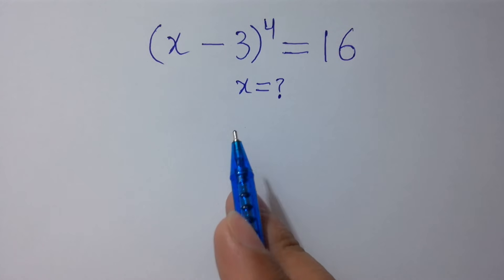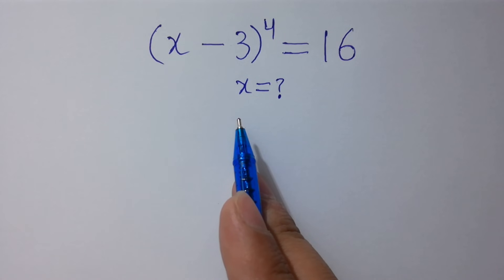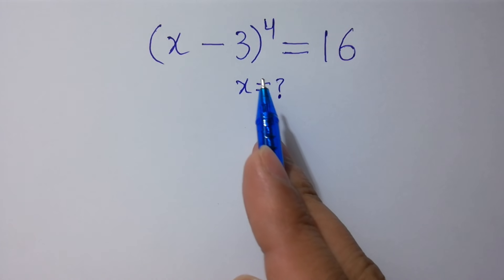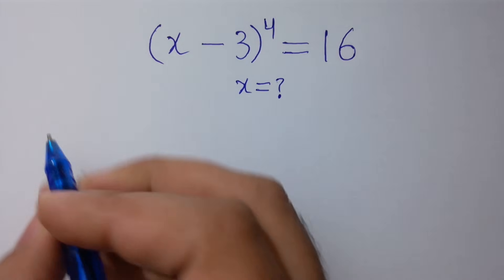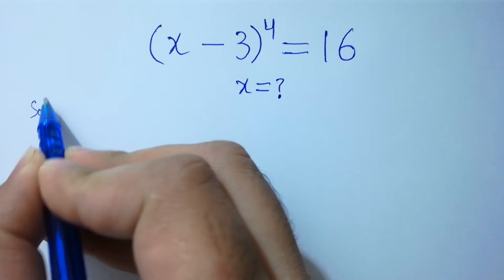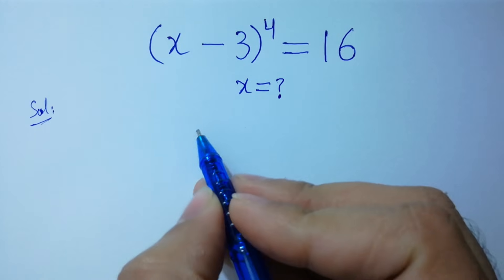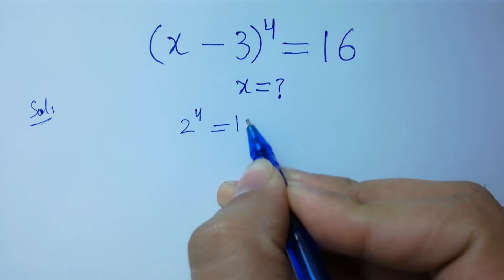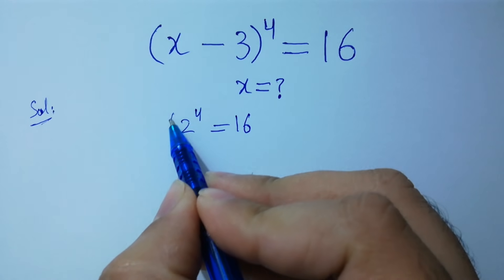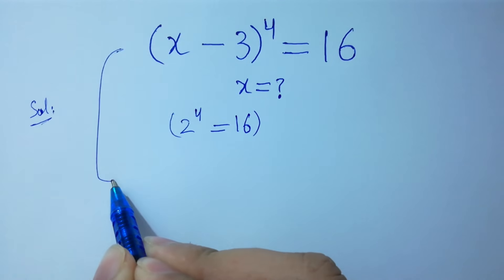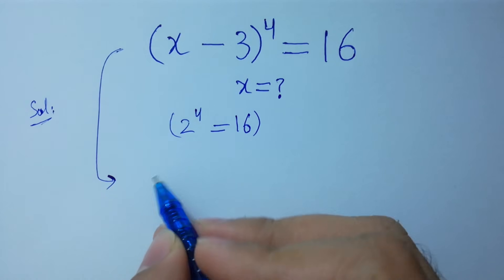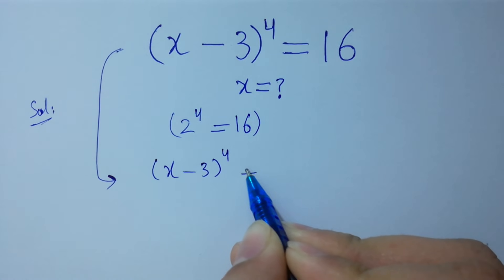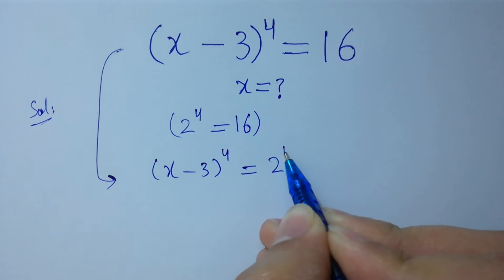Hello friends, find the value of x if (x minus 3) to the whole power 4 equals 16. Let's find the solution. Since 2 to the power 4 equals 16, we can write (x minus 3) to the whole power 4 equal to 2 to the power 4.